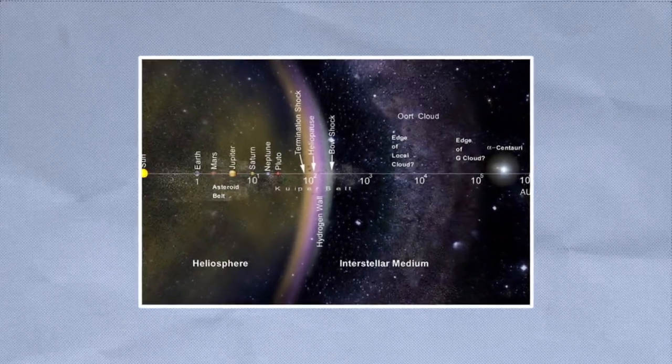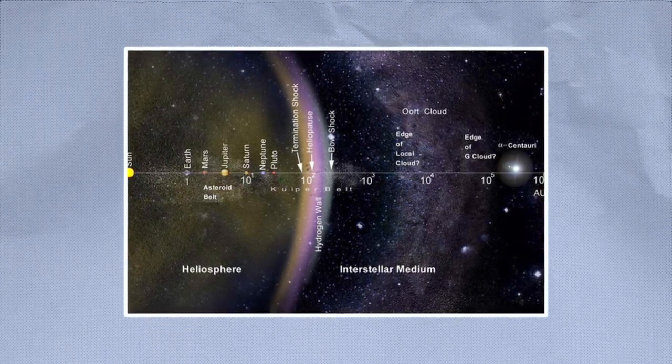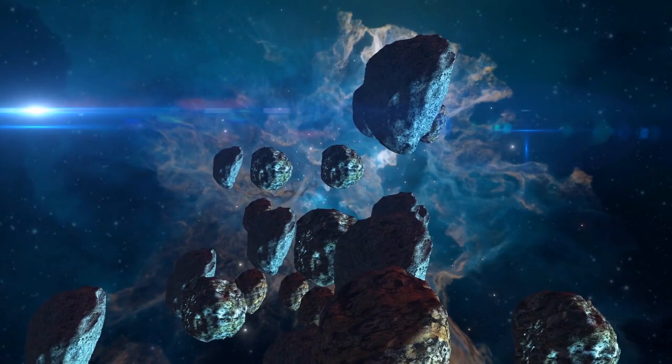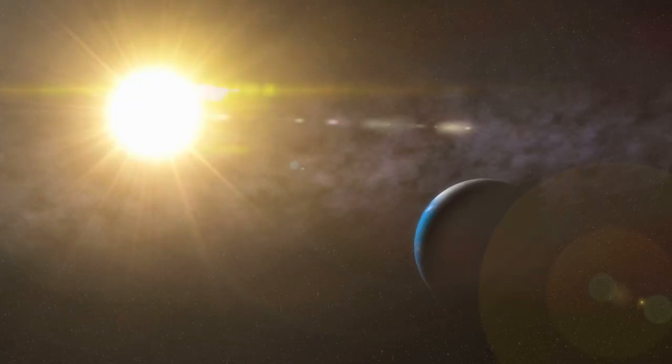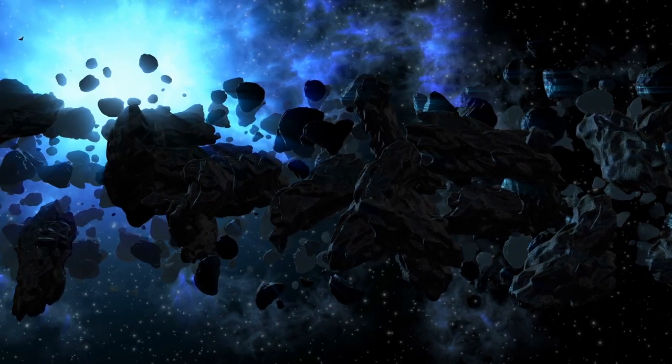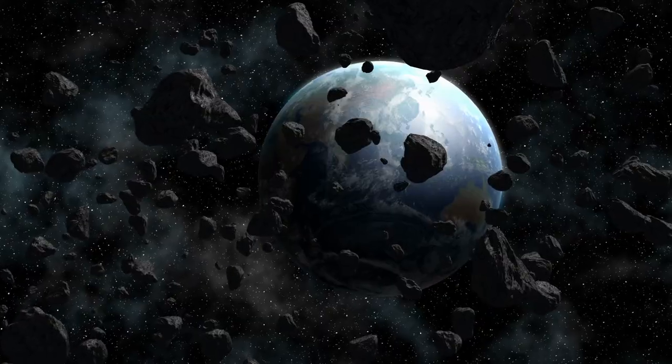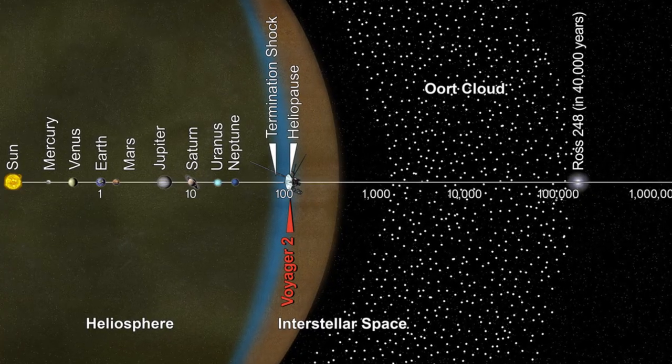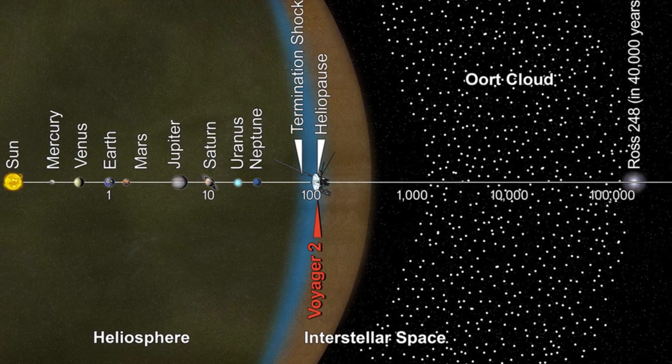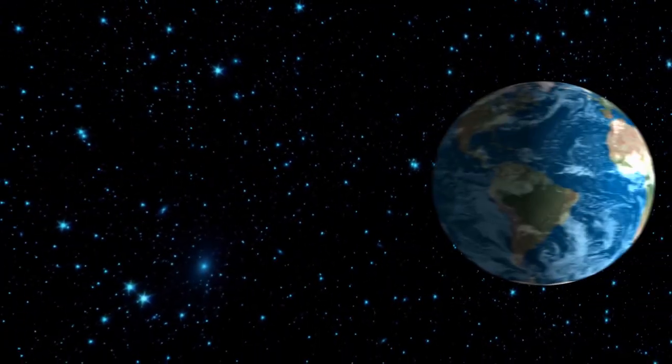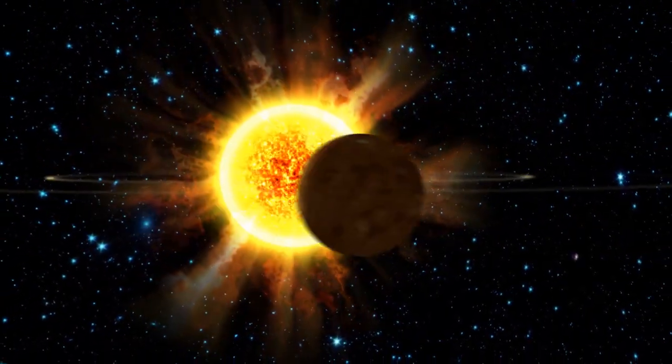The Oort cloud is thought to be a vast spherical shell that surrounds the Sun, planets, and Kuiper Belt objects, and is made up of billions or trillions of ice-based debris fragments that were left over from the solar system's birth. The origin of long-period comets is hypothesized to be it. The inner boundary of the Oort cloud is between 2 and 5 AU from the Sun, whereas the outer border may be up to 100,000 AU from the Sun, with 1 AU being the distance separating Earth from the Sun.